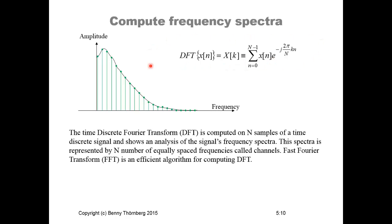And the discrete Fourier transform is a mathematical formula that is developed to be able to compute the Fourier transform analysis also using computers. It's a way of limiting the computational complexity, sometimes also using a fast algorithm called FFT that you might be aware of or have heard about. So the time discrete Fourier transform DFT is computed on n samples of a time discrete signal and shows an analysis of the signal frequency spectra. And this spectra is also then represented by n number of equal space frequencies called channels. So each one of these frequency positions where we compute the discrete Fourier transform, those positions are called channels. And fast Fourier transform FFT is an efficient algorithm for computing this DFT as we said before.